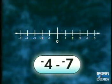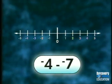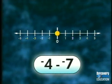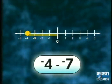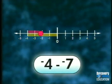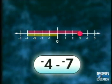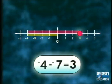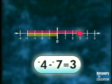In our final example, we'll find the difference of negative four and negative seven. Begin at zero. Move four units in a negative direction. Since we're subtracting a negative seven, we will move in the opposite or positive direction for seven units. As a result, we end at three. Therefore, the difference of negative four and negative seven is three.